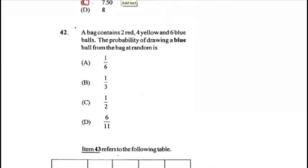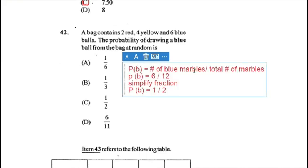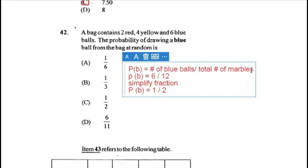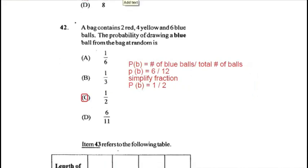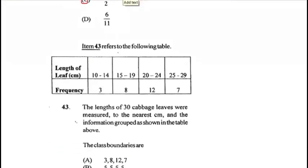Question 42: a bag contains two red, four yellow and six blue balls. The probability of drawing a blue ball is the number of blue balls divided by the total number of balls — six divided by 12 — which simplifies to one half. Answer for 42 is C.